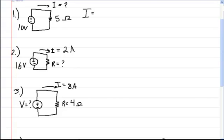Okay, so here we're dealing with Ohm's Law and circuits. In this first circuit, we have a 10 volt power supply and a 5 ohm resistor, and we want to know what's the current.